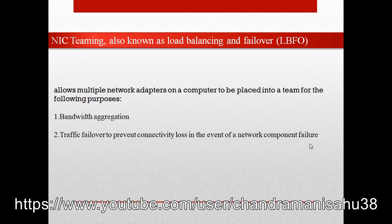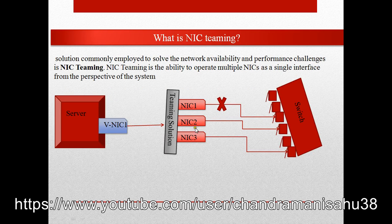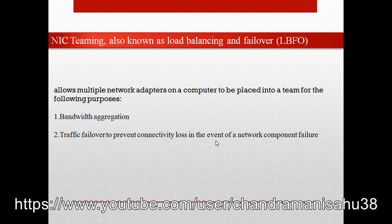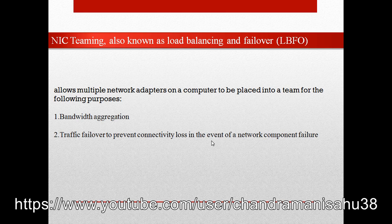With three NIC cards — NIC1, NIC2, and NIC3 — if one card fails, traffic goes to the secondary NIC. If NIC2 fails, traffic goes to NIC3. There is no chance of losing connectivity. So if the first network card fails, it goes to the second; if the second fails, it goes to the third. This is the benefit of NIC Teaming. Thanks for watching, and we will continue in the next video.